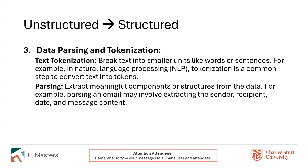We can do data parsing and what we call tokenization. Tokenization is simply breaking what we've got into smaller chunks — smaller, more manageable blocks. For text we can do that using natural language processing, but we can also do that with other types of data. Parsing is about extracting the parts that are meaningful to us given our reporting context. For example, if we're looking at emails, we may just want to extract the sender, recipient, the date, and the content of the message — we don't need the SMTP or MIME constructs. We just need sender, recipient, and maybe the message content.